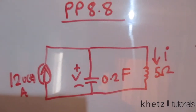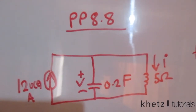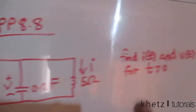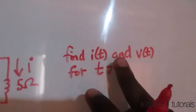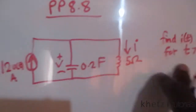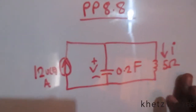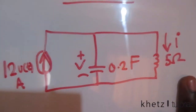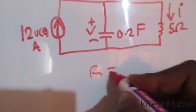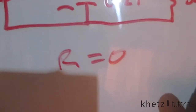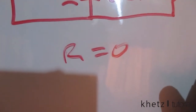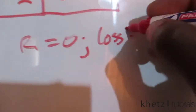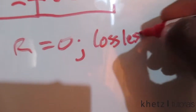Welcome to CAT's Tutorials. In this video I'll be covering practice problem 8.8, where we find i(t) and v(t) for time greater than zero in this circuit. The first thing you notice is that we don't have a resistor, so R equals zero. Since R equals zero, we can conclude that we have a lossless circuit.